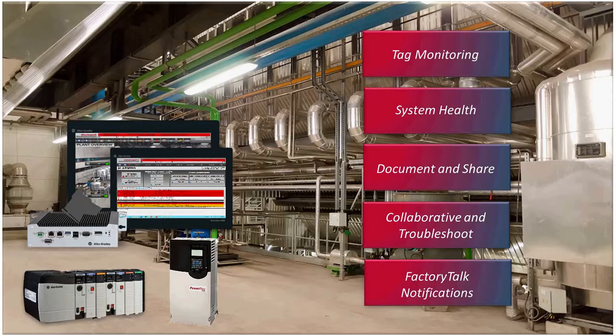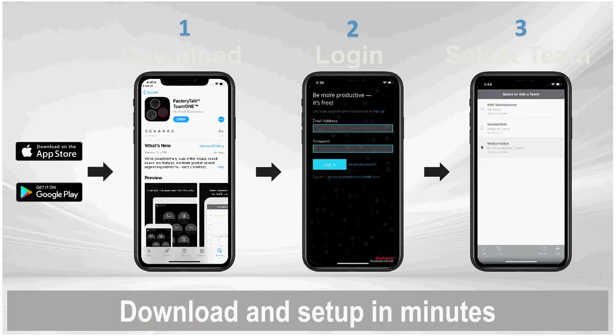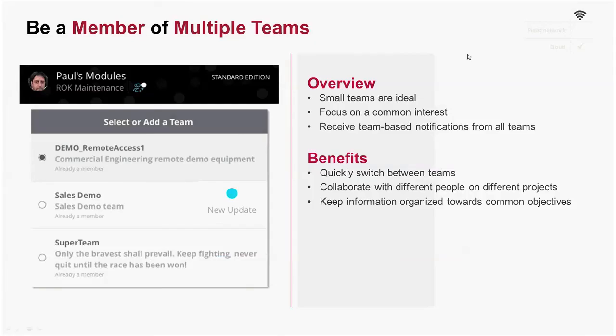The full functionality of the app requires a wireless connection to your plant floor devices and internet access — if you don't already have a wireless access point at your plant, Turtle and Hughes sells cost-effective reliable solutions for this. Step one: download the Factory Talk Team One app and log in with your Knowledge Base credentials, then create a team or select one you've already been invited to join. You can be a member of multiple teams, segregated by shift or project group, and the standard version allows you to easily switch between teams without logging out.